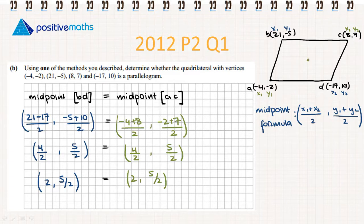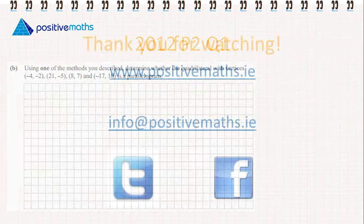We have shown that the midpoint of BD equals the midpoint of AC. Therefore the diagonals do bisect each other, so the quadrilateral with the given vertices is a parallelogram.